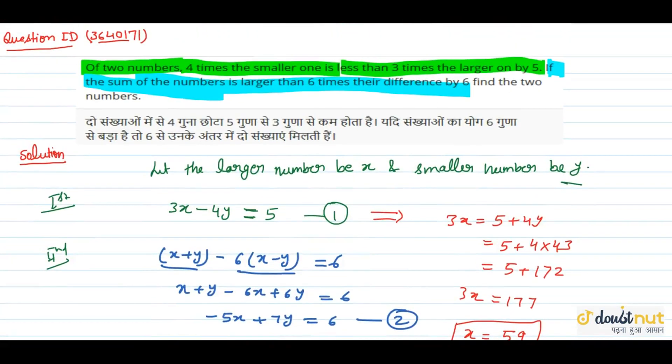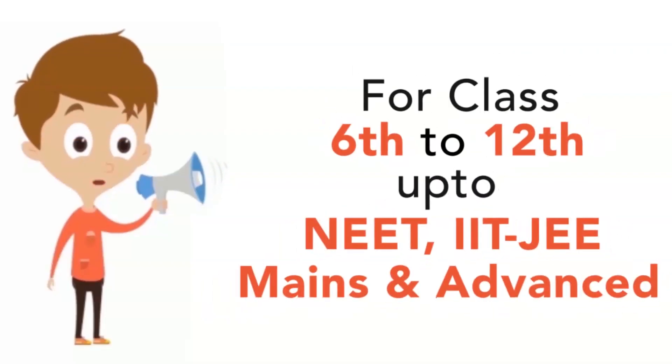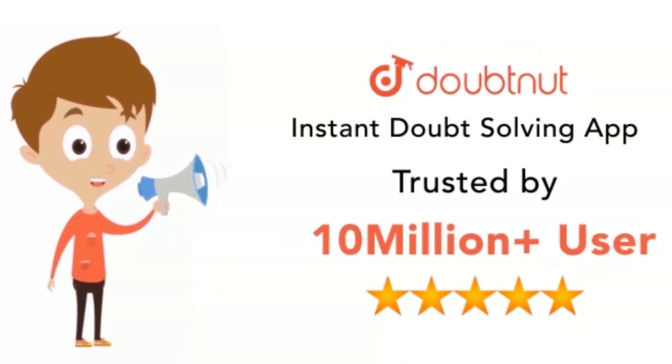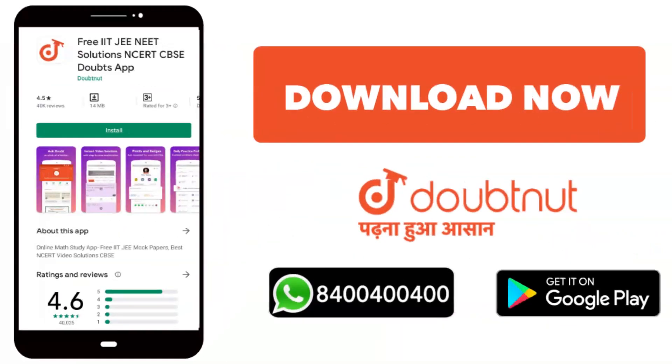So we have two numbers. One number: x equal to 59, and y equal to 43. This is our answer. Thank you very much.